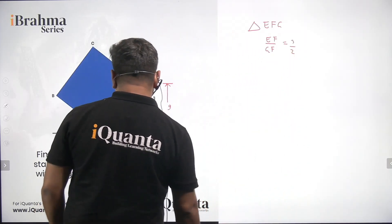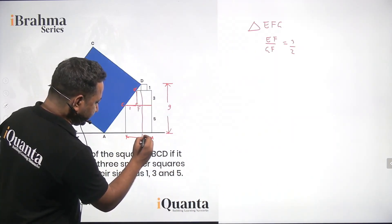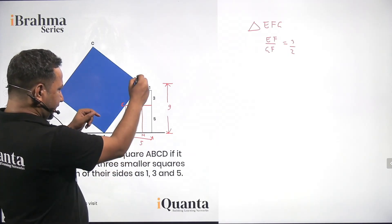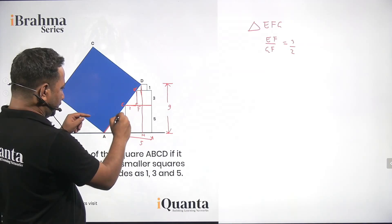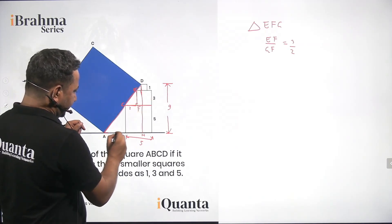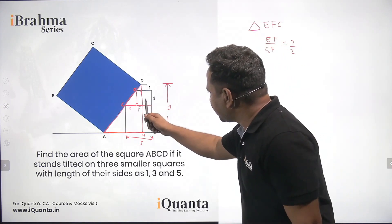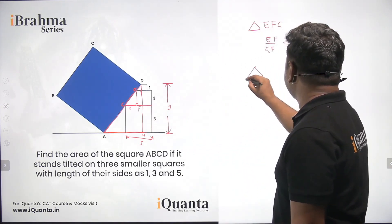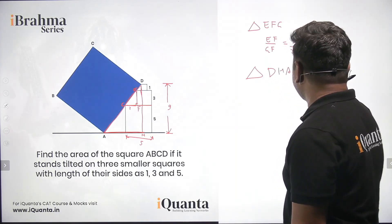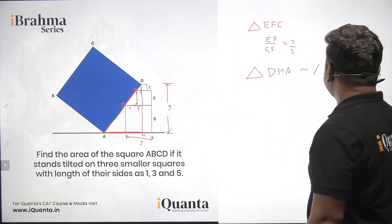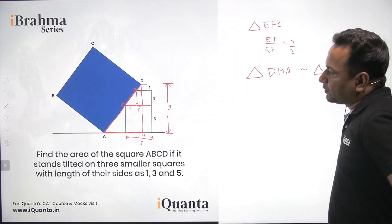Now let us mark one more triangle. Mark this point as H. Now we can have a triangle DHA. And as we can see that triangle DHA is similar to triangle EFG.